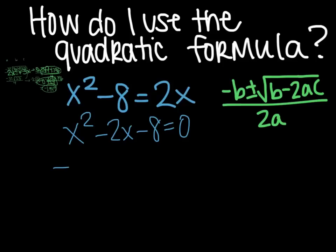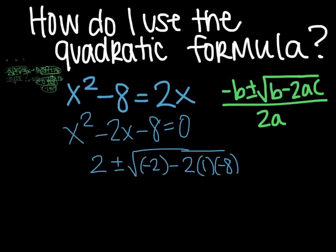So the opposite of b would be 2, because it's negative 2, plus or minus the square root of negative 2 minus 2 times 1 times negative 8, all over 2a, and that would be 2 times 1.